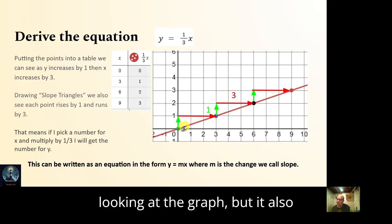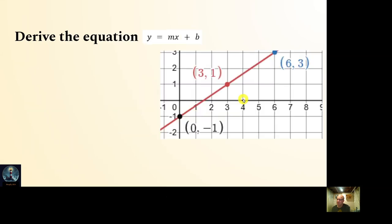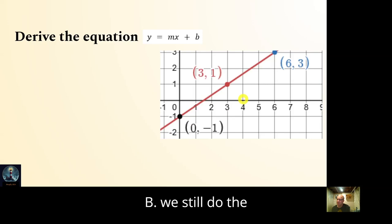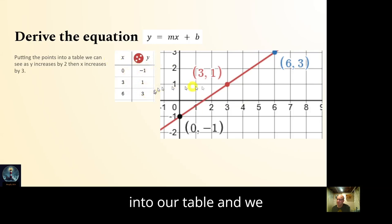The equation not only gives us the nice good points we can find by looking at the graph, but also all the points in between. Now deriving y equals mx plus b — we do the same basic thing and start by putting the points into a table.